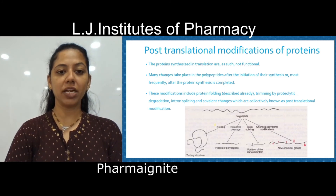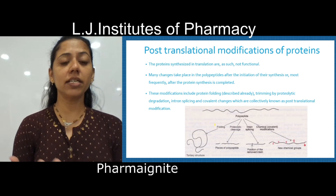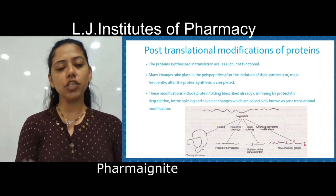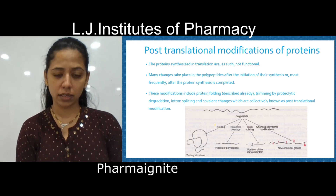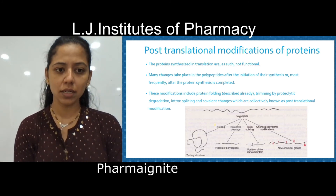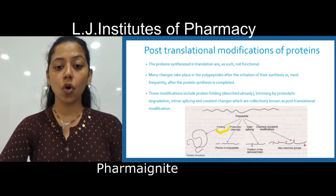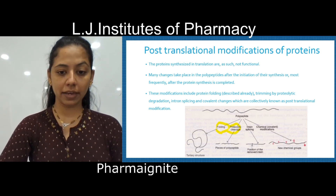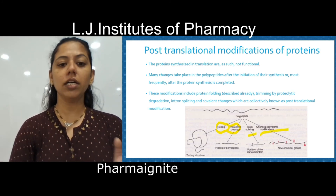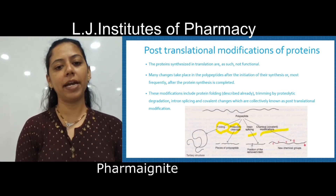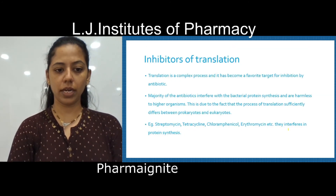The last step is post-translation modification — same as in transcription. The initially formed copy of protein is not the active or functional one. After many modifications — which include folding, proteolytic cleavage, intein splicing, and chemical modification — it converts that polypeptide into the functional protein.